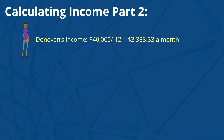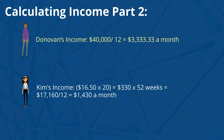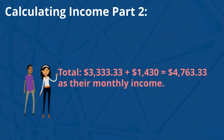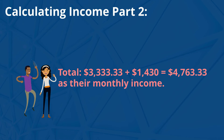Let's take a look at Kim's income now. $16.50 times 20 hours is equal to $330 times 52 weeks is equal to $17,160 divided by 12 is equal to $1,430 a month. Now let's add both of them together. $3,333.33 plus $1,430 is equal to $4,763.33 as their monthly income.